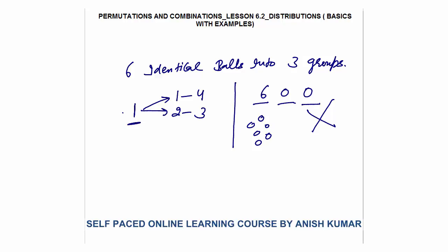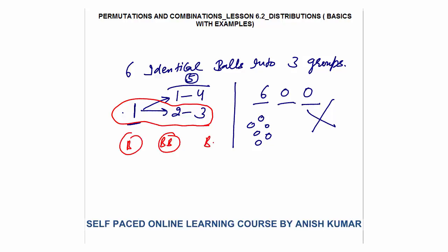So the valid cases are: first take 1. Remaining are 5. How can we form 5? As 1 and 4, or 2 and 3. So the cases with first element 1 are: (1, 1, 4) and (1, 2, 3). This is the pattern you have to follow to solve the question.